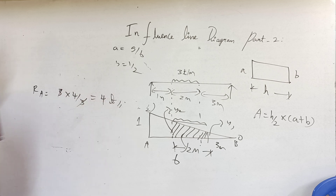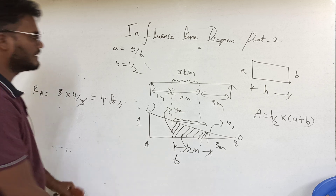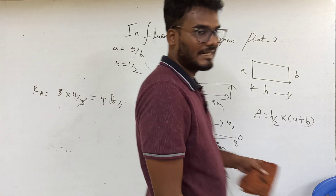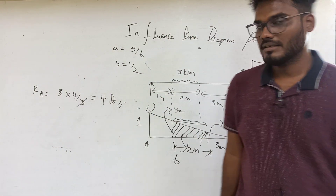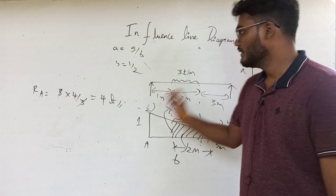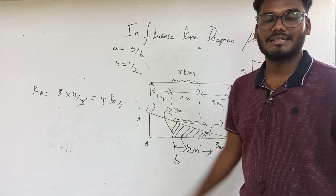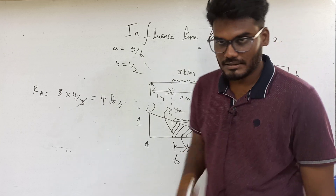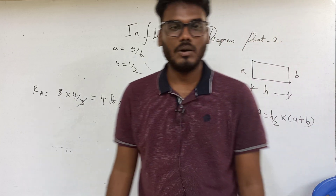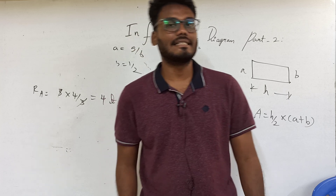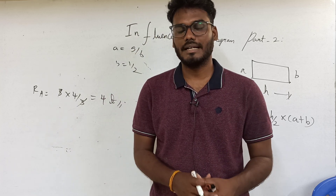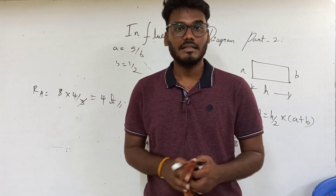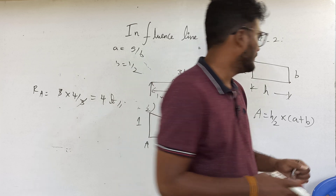So this is how we draw and calculate the reaction using ILD when there is a UDL. Next we will see how to calculate the shear force ILD for a point somewhere between a simply supported beam.